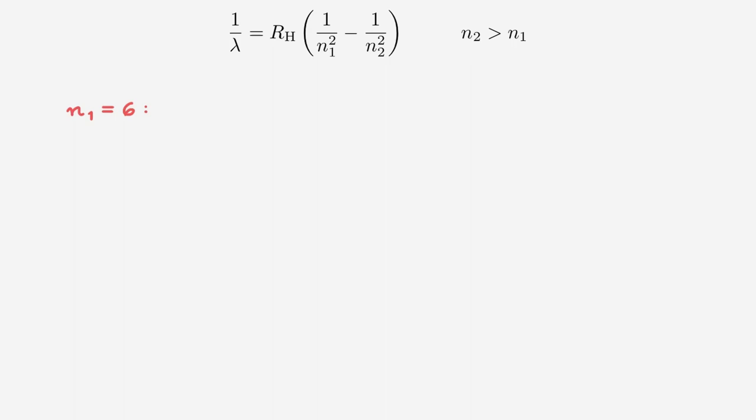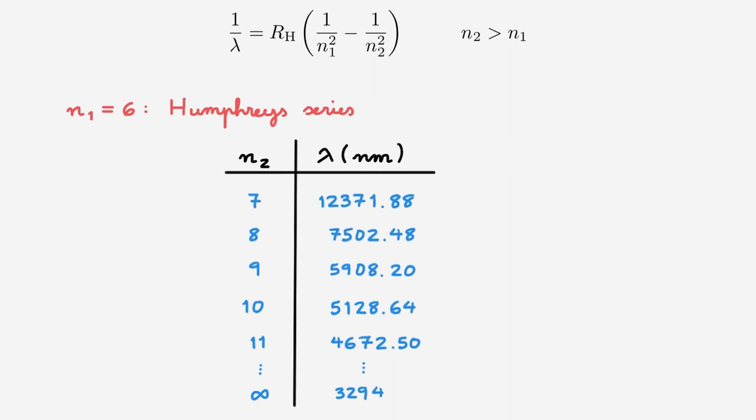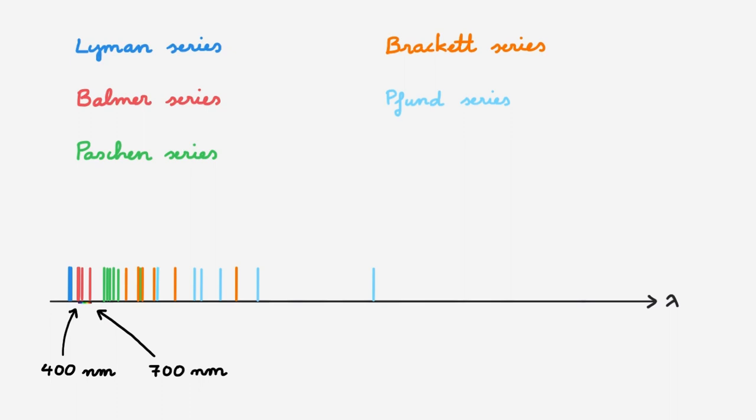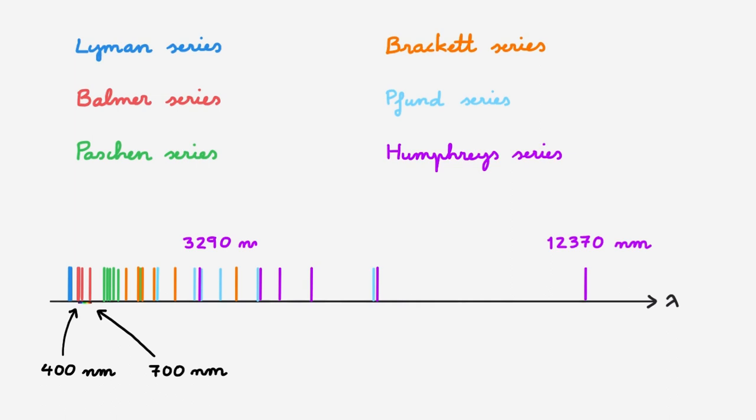The next spectral series corresponds to N1 equals 6, and it's called the Humphreys series, named after Curtis Humphreys, who discovered it in 1953. Completing the table in the usual way and going back to our figure of the electromagnetic spectrum, the Humphreys series starts at around 12,370 nanometers and terminates at around 3,279 nanometers. This places the entire Humphreys series within the infrared region of the electromagnetic spectrum, and it also overlaps with the previous series. We could go on for higher values of N1, but the subsequent series no longer have specific names, and you can compute them yourself using the Rydberg formula.